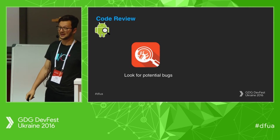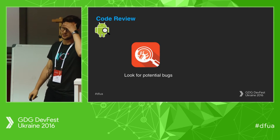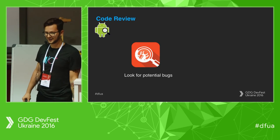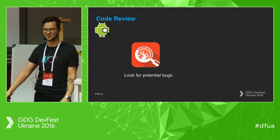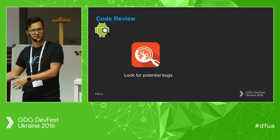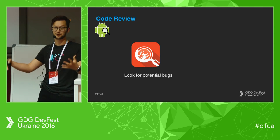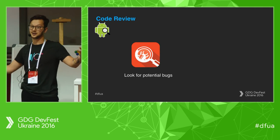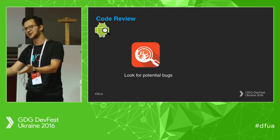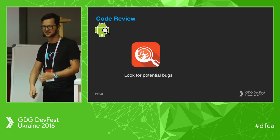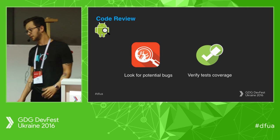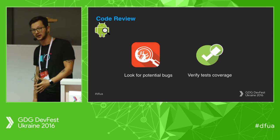We had a situation where a guy would comment on every pull request just to tell you to put `final` on every parameter. And every time you opened a pull request, you'd get 20 comments: 'put final.' That sucks — just automate that, don't do that.